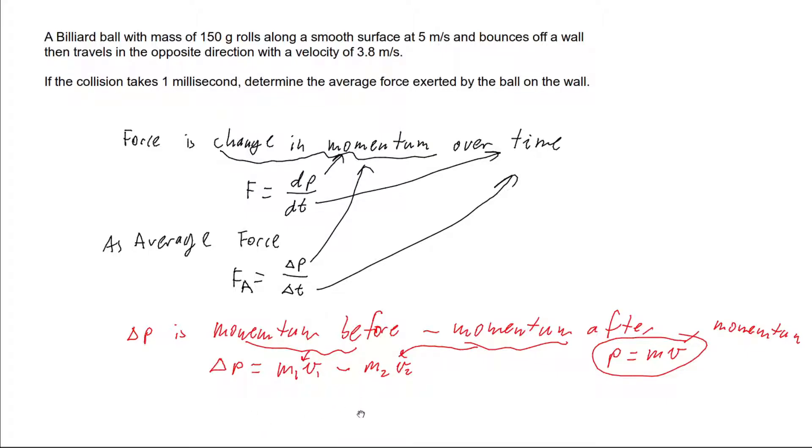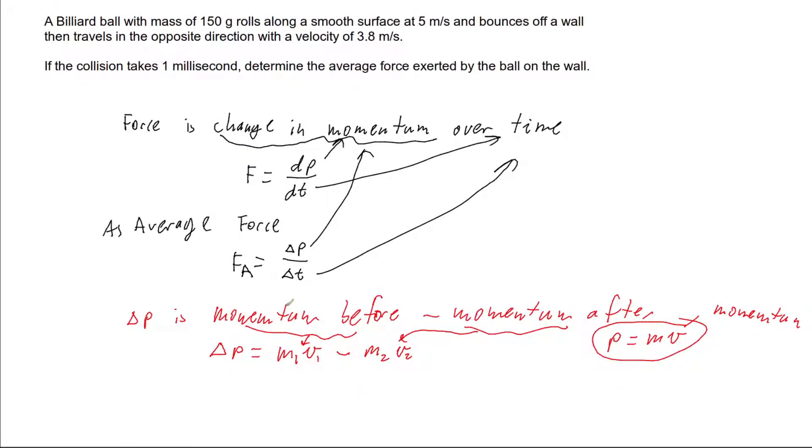So if I go and start substituting values into my problem, my mass hasn't changed before and after. At least we're going to assume it hasn't. So for both cases, our change in momentum is going to have 150 grams as our mass. But before we do this, we've got to think that our mass cannot be in grams. Mass in all physics problems is done in kilograms, so we need to change our mass to just be 0.15 kilograms.